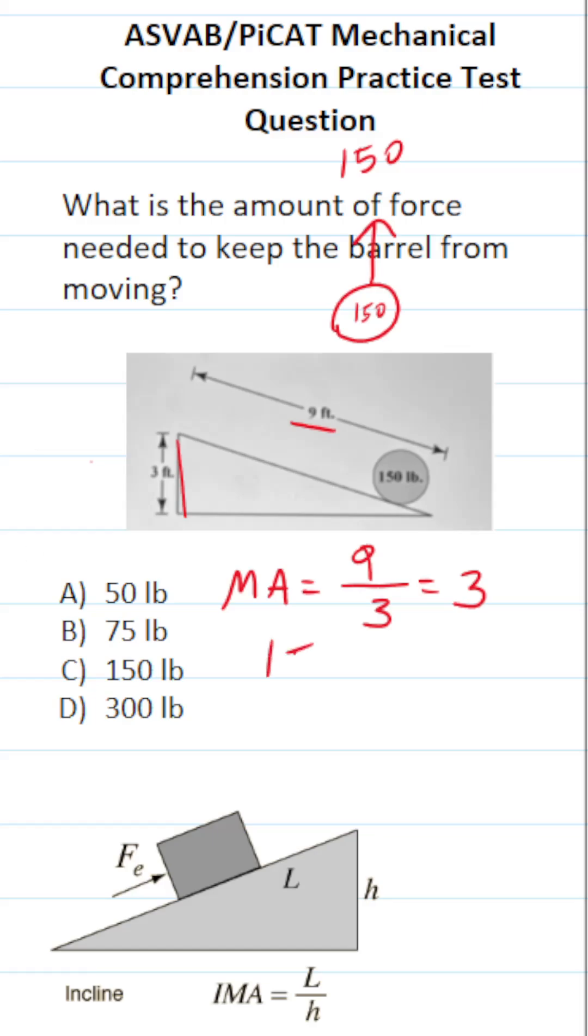We take 150 and multiply it by 1/3, because it's 3 times easier to move this weight using an inclined plane. If you can't do this mentally, place 150 over 1 to write it as a fraction. 150 divided by 1 is 150.